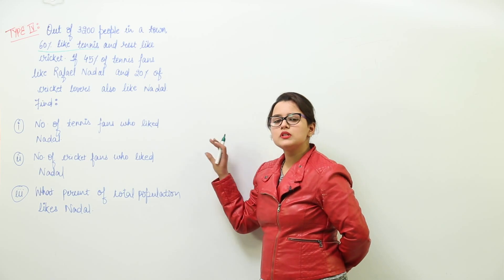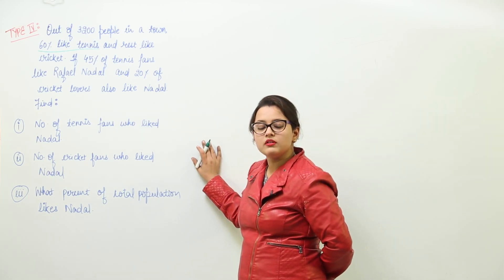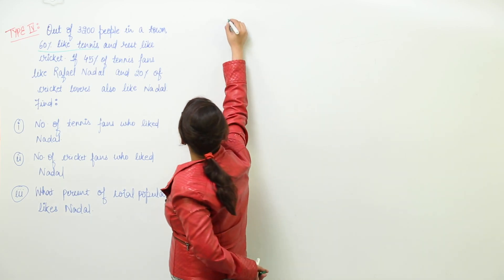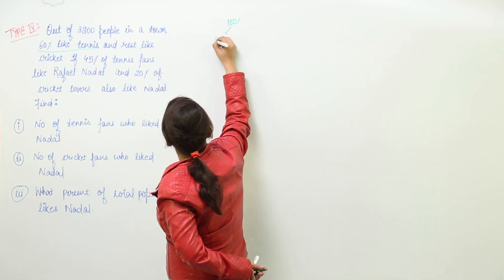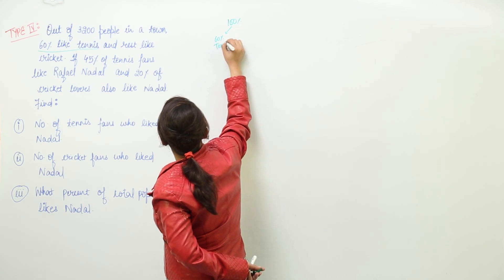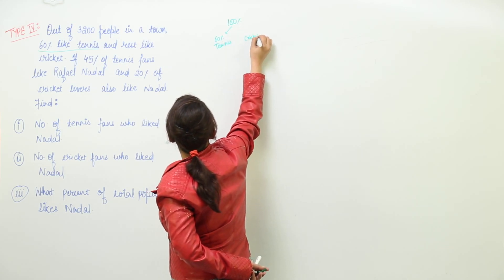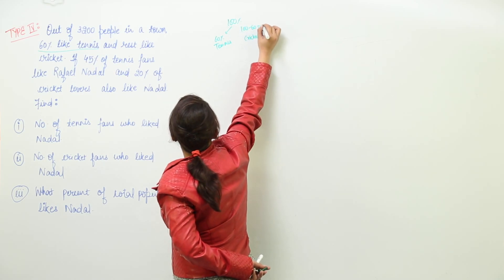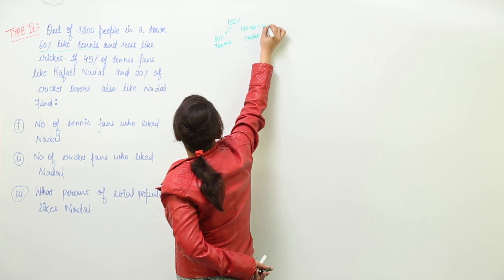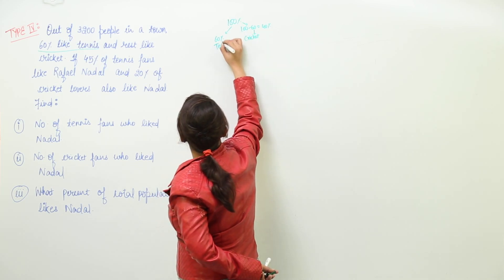If the total is represented with 100%, and 60% are liking tennis, then how many are left who will like cricket? It will be 100 minus 60, that is 40%. So 40% are going to like cricket.